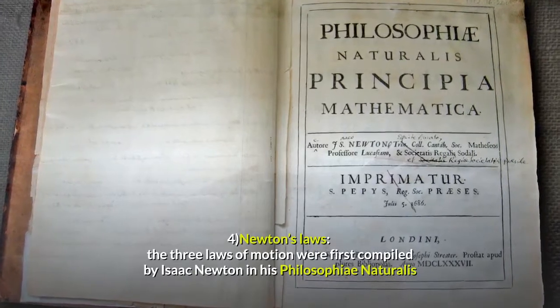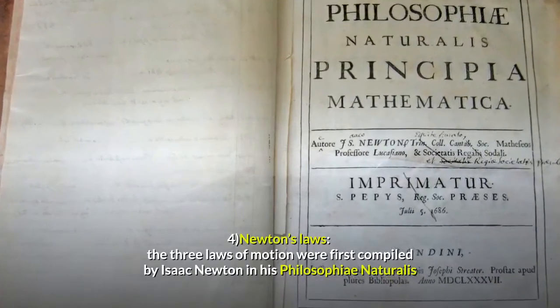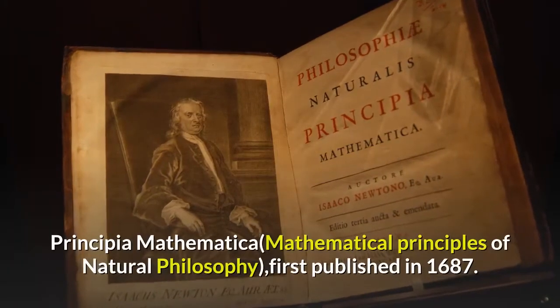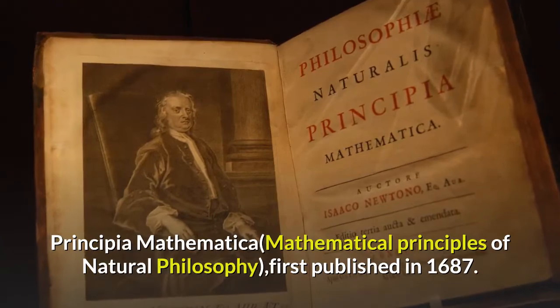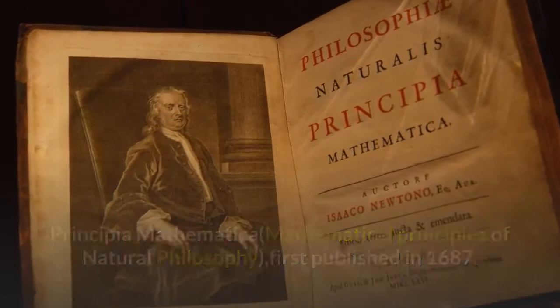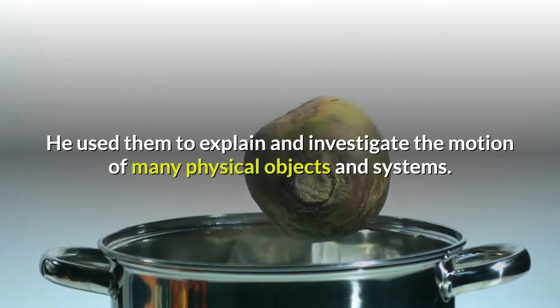Number 4: Newton's Laws. The three laws of motion were first compiled by Isaac Newton in his Philosophiae Naturalis Principia Mathematica (Mathematical Principles of Natural Philosophy), first published in 1687. He used them to explain and investigate the motion of many physical objects and systems.